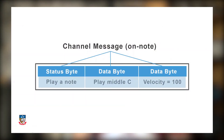This message consists of a status byte, which tells an instrument to play a note, and two data bytes indicating which note to play — say middle C — and which velocity or loudness to play: soft, medium, loud, or somewhere in between.